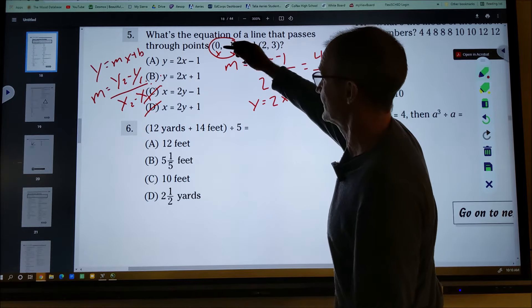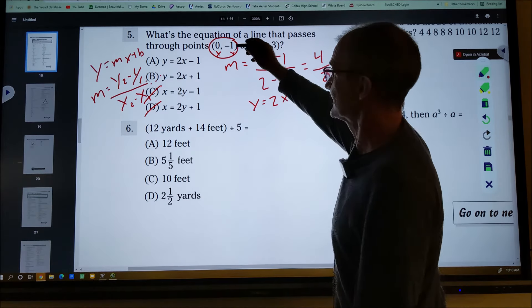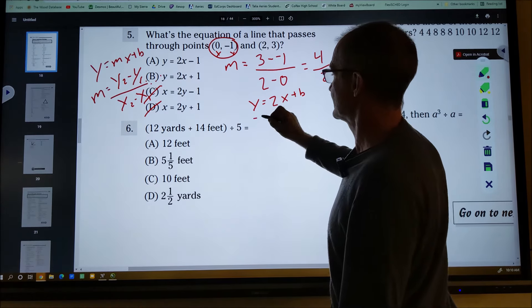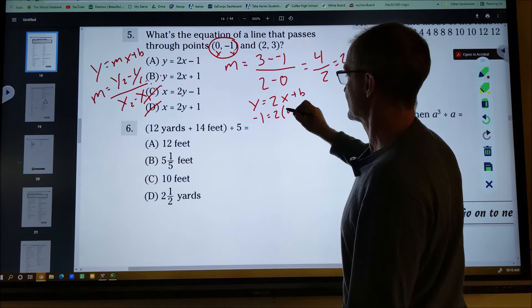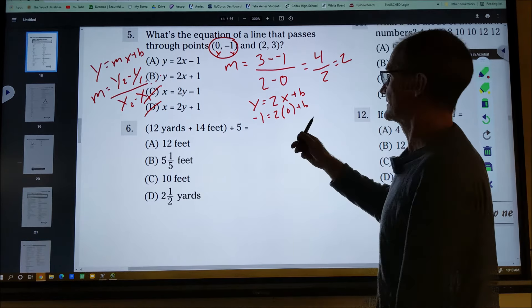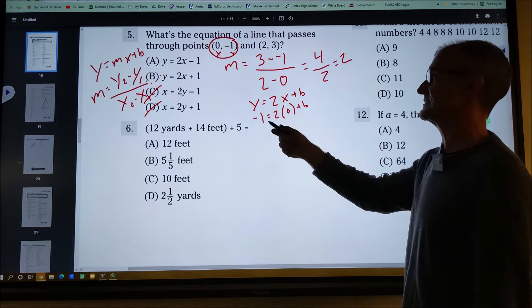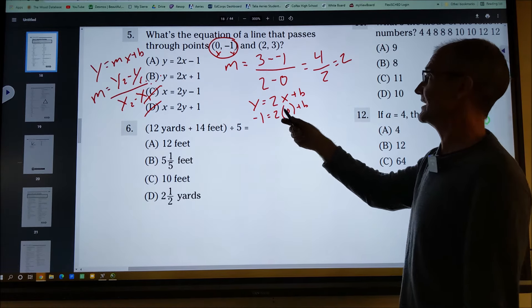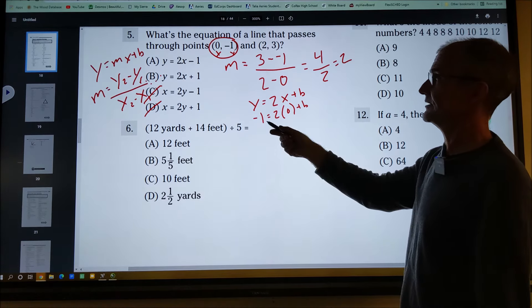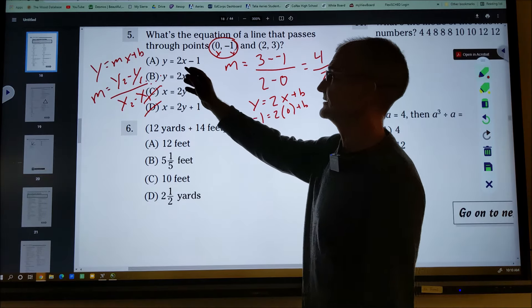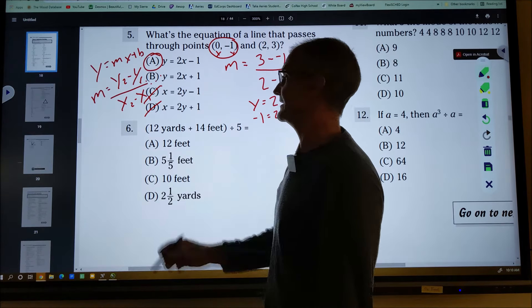I'm going to take this point right here, plug that zero in for x, a negative one in for y. Negative one equals two times zero plus b. This is zero. So b is equal to negative one. So I have a slope of two, a y-intercept, a negative one. There it is right there. So it's answer A.